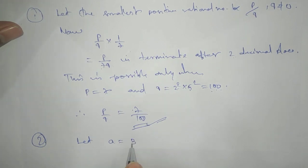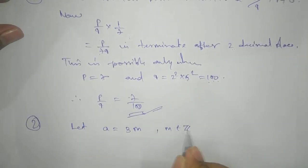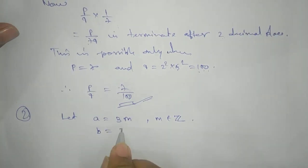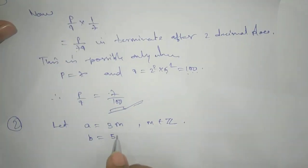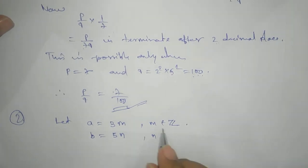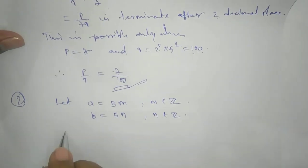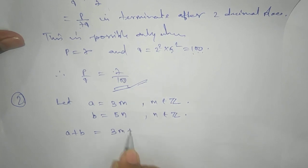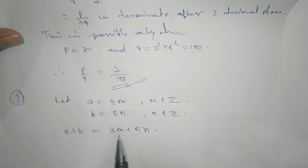If we take a, its least prime factor is 3, so a = 3m where m is some integer. Similarly, b has least prime factor 5, so b = 5n where n is some integer. Now our target is a + b, which gives us 3m + 5n, and we need to find the least prime factor of this expression.